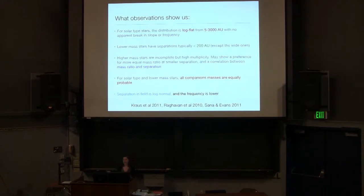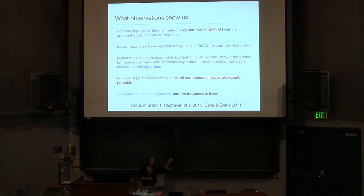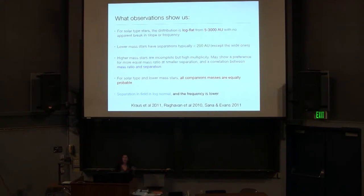There are some distinctions in the separation distribution as a function of mass. Lower mass stars tend to have slightly smaller separations. Higher mass stars are a bit trickier in the sense that it's a greater observational hurdle to observe both enough of them — because they're typically further away and rare — and to observe a broad range of parameter space. For example, if you take an O star and put a G star next to it, it's very hard to see. So we can't see very unequal mass binaries around O stars, which can bias our understanding of the mass ratio and separation distribution.